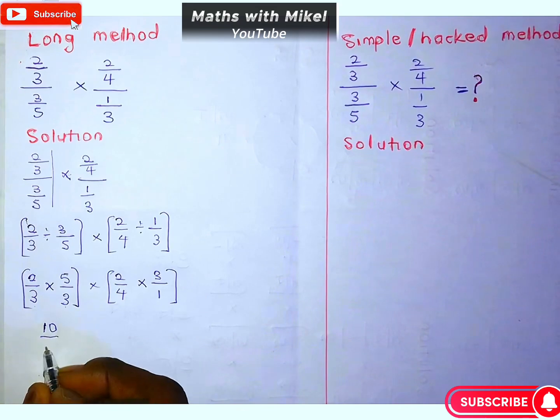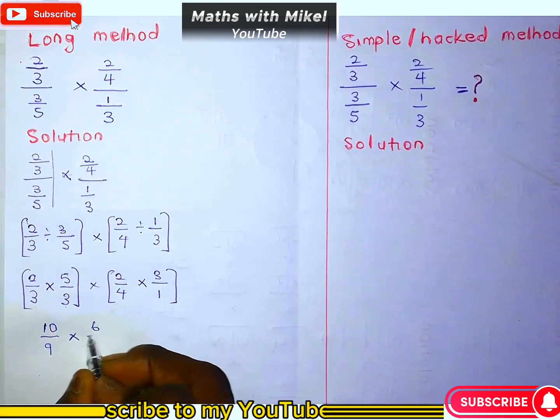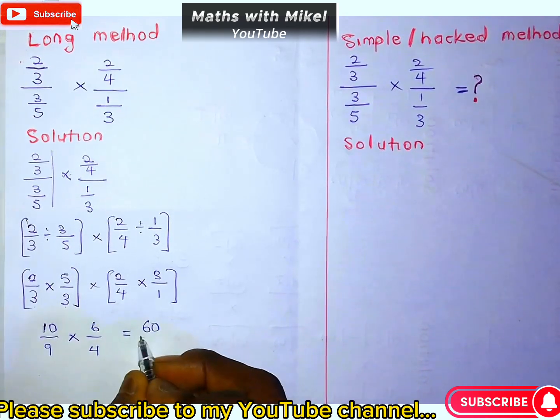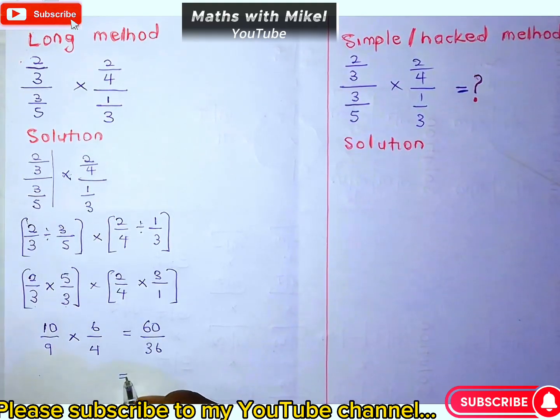That gives us 10 over 9 times 6 over 4, and this gives me 60 over 36, which is the same as 5 over 3.